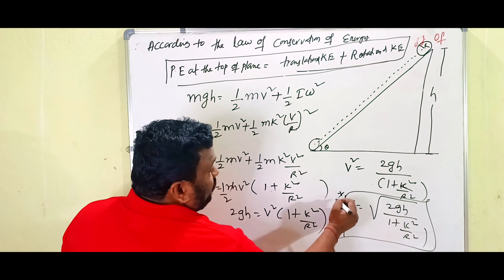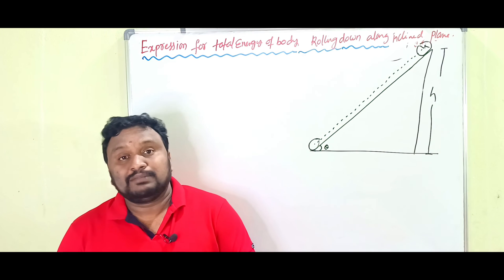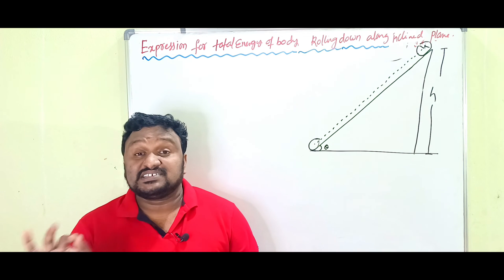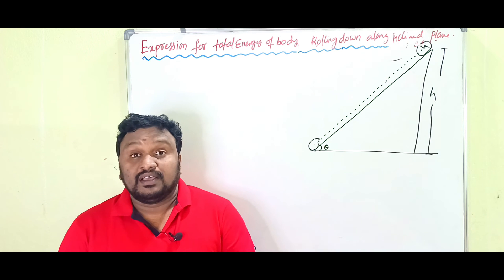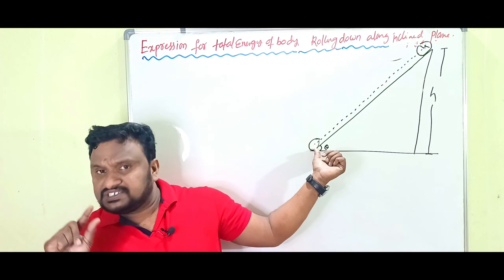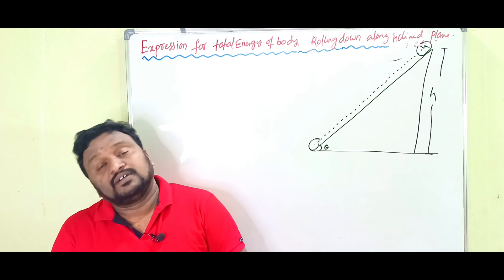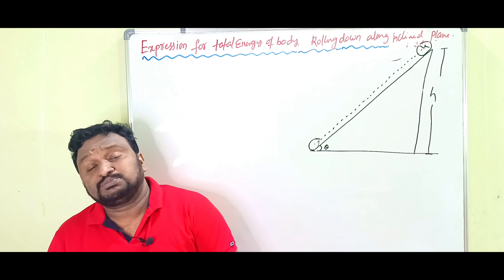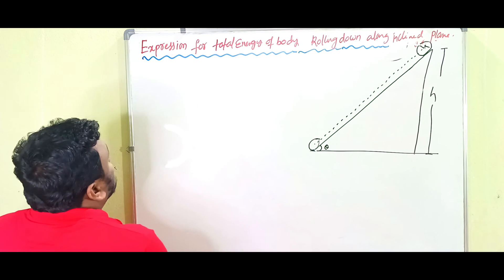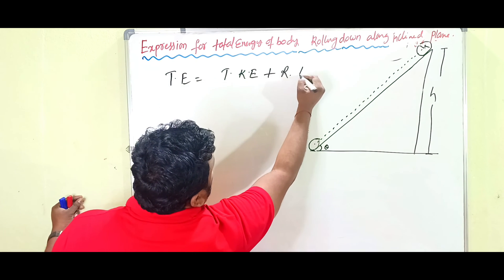Next we derive the expression for the energy of a rolling body on an inclined plane. The total energy of the body is a combination of translational kinetic energy and rotational kinetic energy. When the center of mass is in translatory motion and the axis passes through the center of mass, it is in rotary motion. So total energy is taken as the combination of translational and rotational kinetic energy.